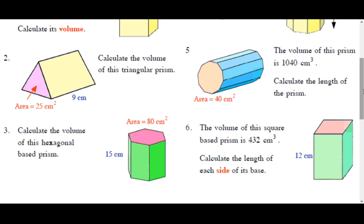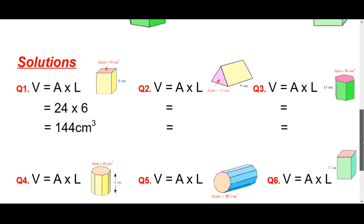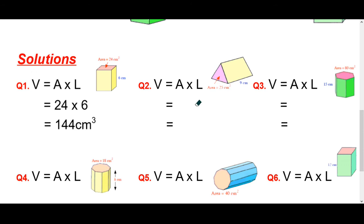Okay, you should have now tried those if you paused it. I'm now going to go over the answers to the questions. Right, so question 2 and question 3 are very similar to what we just talked about. Volume equals area times length. This area here is 25. This is a triangular prism. They're telling us the area is 25. The length is 9. So it's just 25 times 9. And that works out as 225 cm cubed.